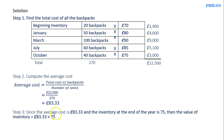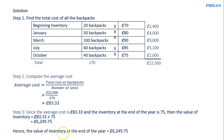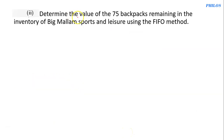In step three, we multiply the average cost by what remains in stock at the time of valuation. According to the question, there were 75 backpacks in stock at the time of valuation, so we multiply the average cost by 75. 83.333 times 75 gives 6,249.75. We conclude that the value of inventory at the end of the year is 6,249.75.